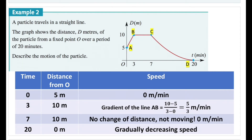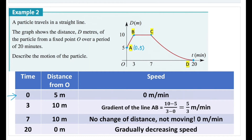The starting point a at (0, 5) implies the particle is five meters away from the origin at the beginning. When time is zero, the distance d is equal to five meters. The speed at our starting point is zero because we just started and haven't moved yet. The first segment ab is a straight line, and we can find the gradient. The gradient is equal to rise over run, using the two endpoints a and b.